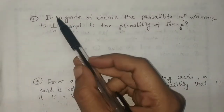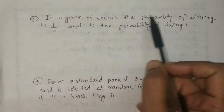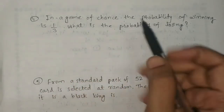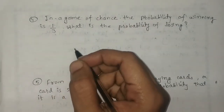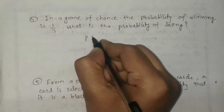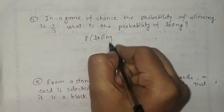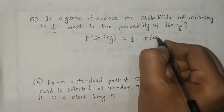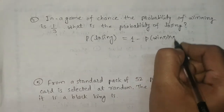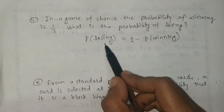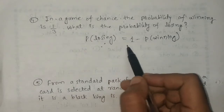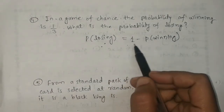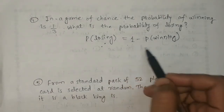The next question: in a game of chance, the probability of winning is 1 by 3. We have to find the probability of losing. We know that the probability of not having something equals 1 minus the probability of having something, since 1 is the total sum of all probabilities.